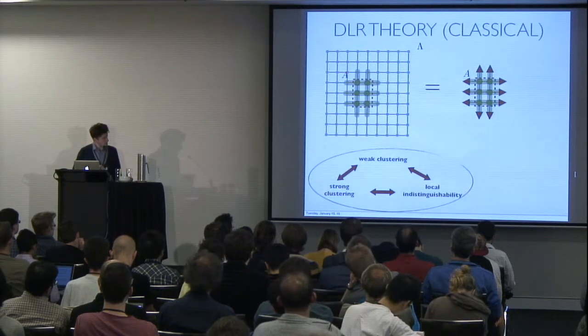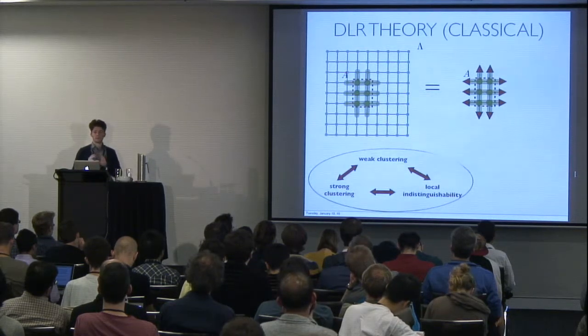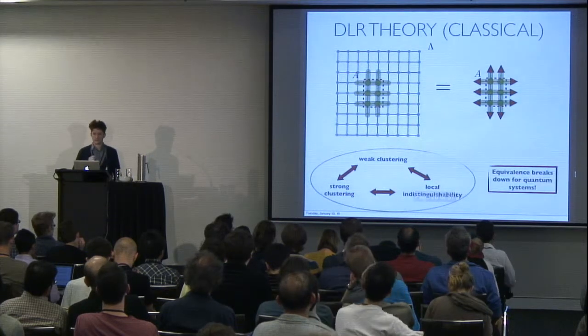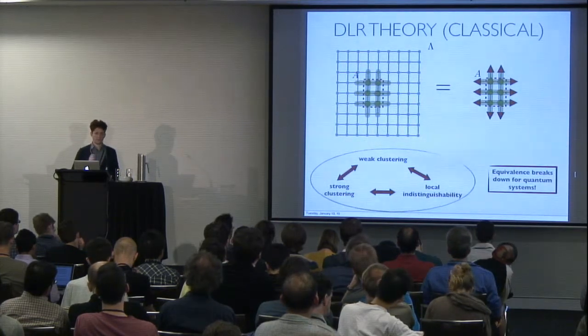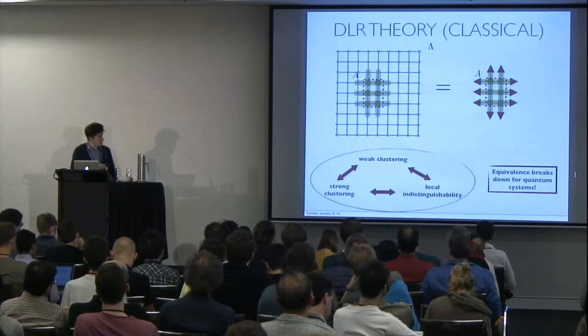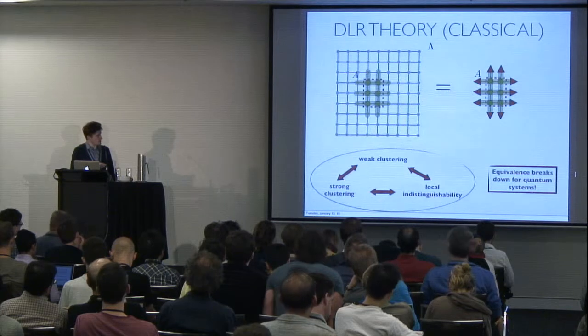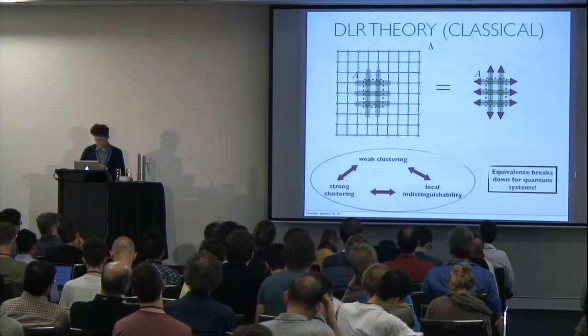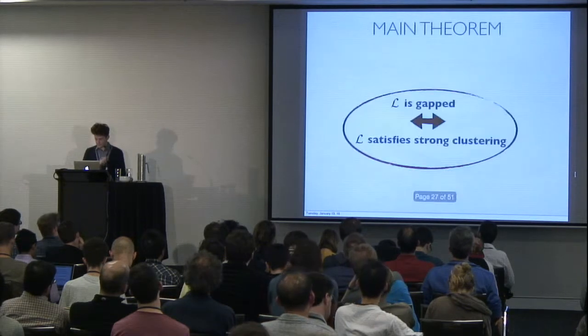And this should be understood as the classical equivalent of local topological order. Importantly, this does not, this breaks down in the quantum setting even when we're dealing with commuting Gibbs states. And that's because you cannot represent the restriction of a Gibbs state, even a commuting one, by simply fixing the boundary conditions.